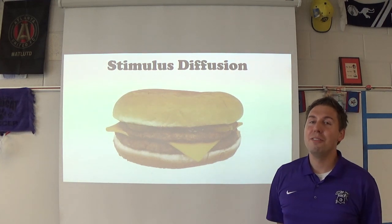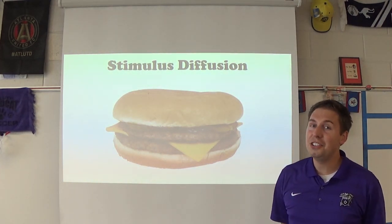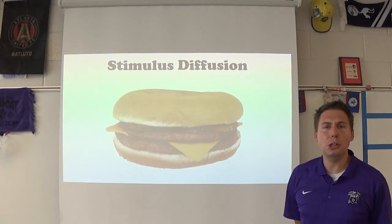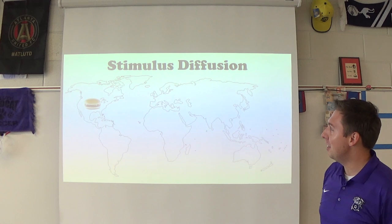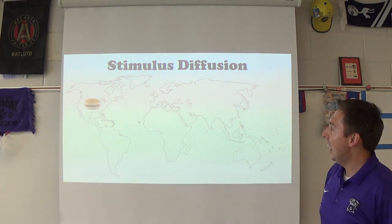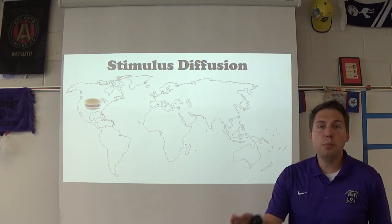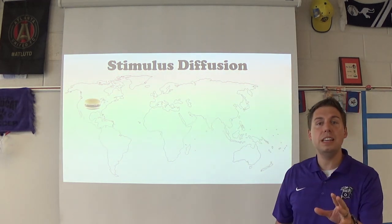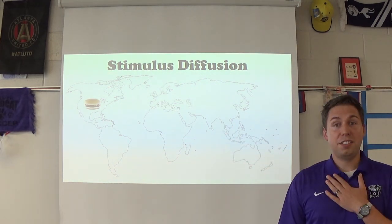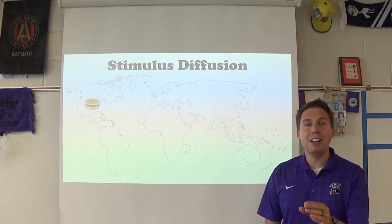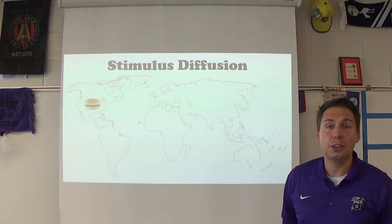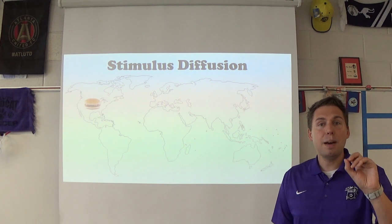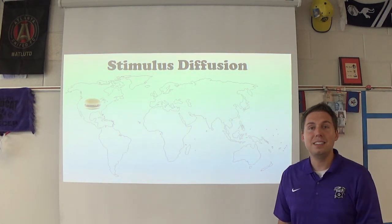For the last one, we have stimulus diffusion. It's about lunchtime, and here we have a burger. For stimulus diffusion, we're going to look at a massive chain of restaurants in America. Stimulus diffusion is where something moves and then has a slight change or alteration to meet the taste or the needs of a new culture. So the burger, while it satisfies me completely, might not satisfy the palate of someone in Australia, Asia, Africa, South America, or Europe. When these burgers from this massive chain move to these places, they adapt the flavor, the taste, and even the contents to appease the people it's going to.